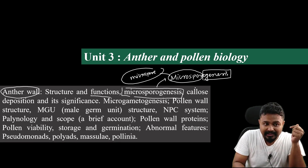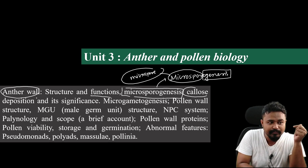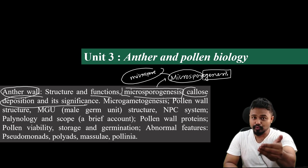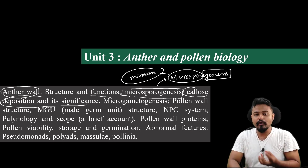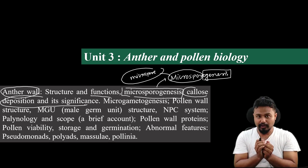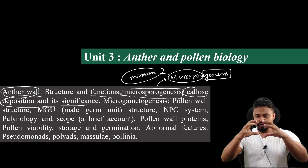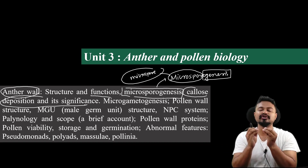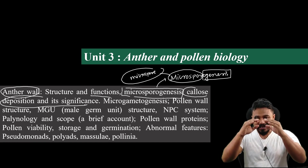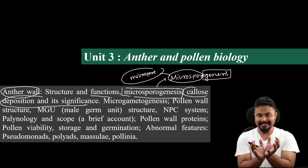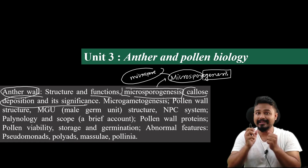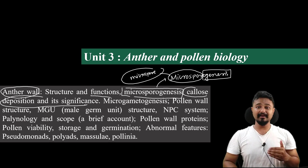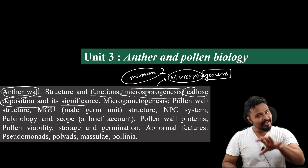We will discuss Callose deposition and its significance. During the Microsporogenesis process, microspores need to be protected. This protection is called Callose deposition. Callose is a carbohydrate that forms an envelope around the microspores, protecting them. We will also discuss why chemicals and proteins are involved in this significance.